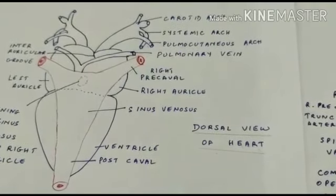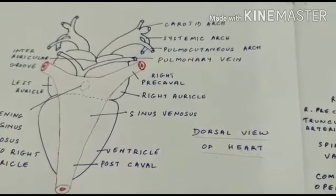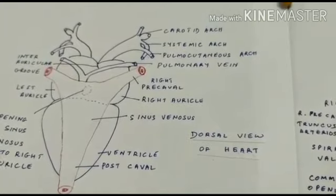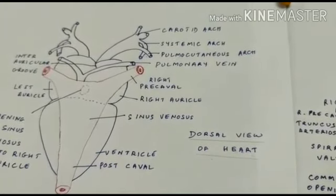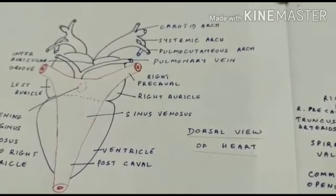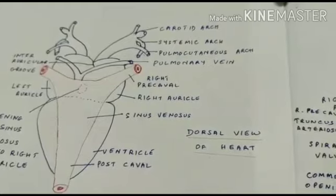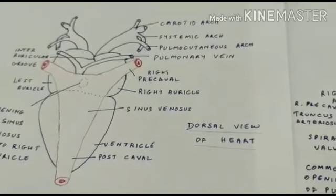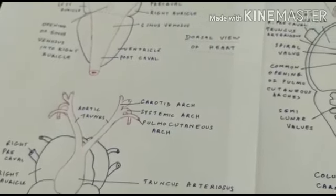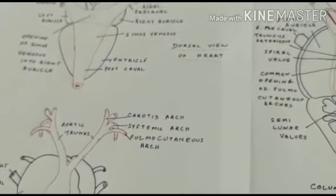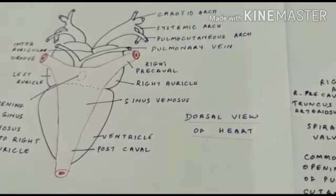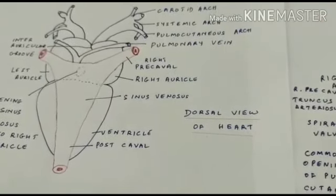In the last video we have seen the structure of the heart. Now we understand about the various parts of the heart like the auricles, ventricle, sinus venosus, and the truncus arteriosus. So now let us try to understand how the working of the heart takes place.